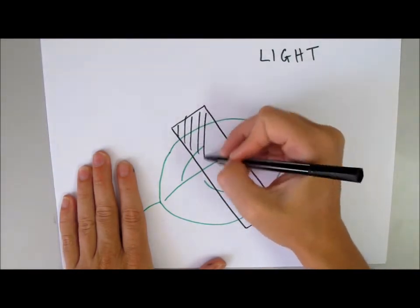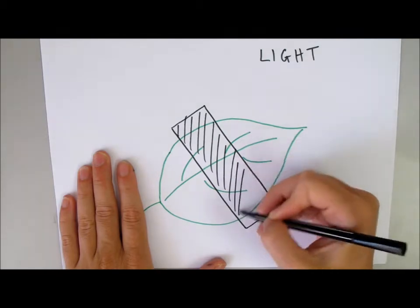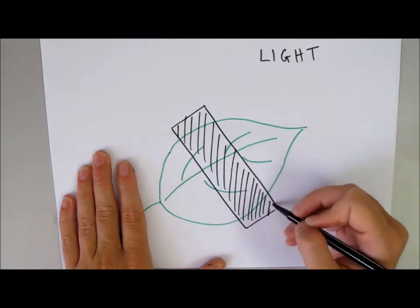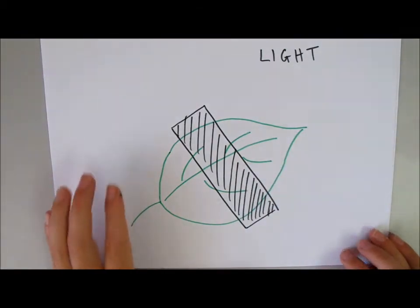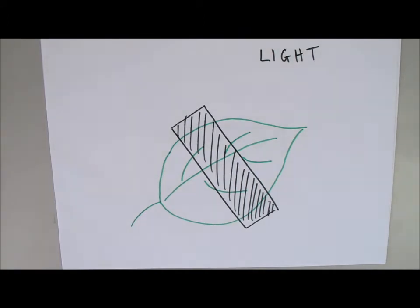Now, you can either do this in a very straightforward shape, like I've drawn, or in a slightly more imaginative shape, and then we will leave it and allow the plant to photosynthesise naturally, and test the leaf after 24 to 48 hours.